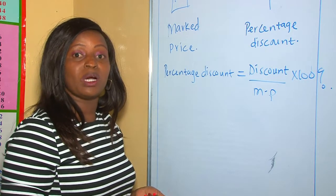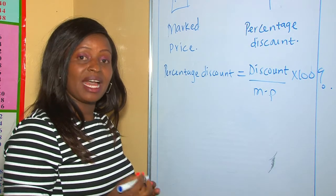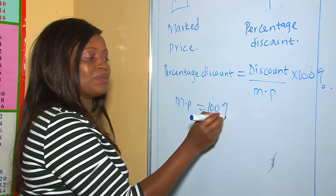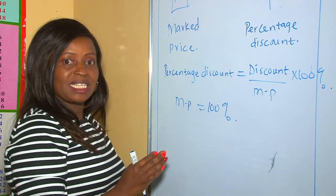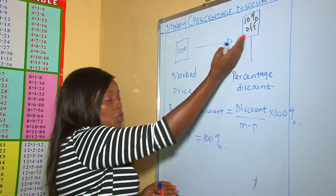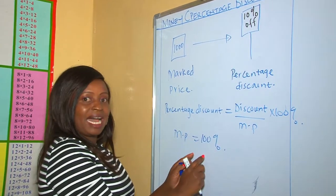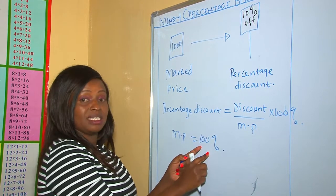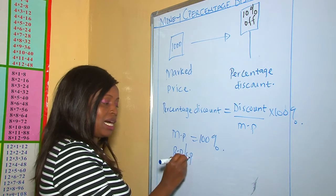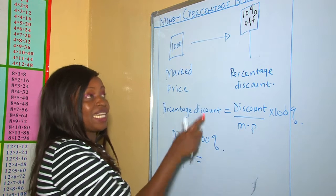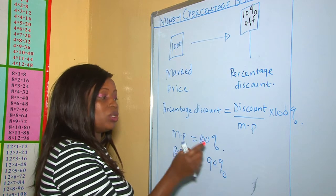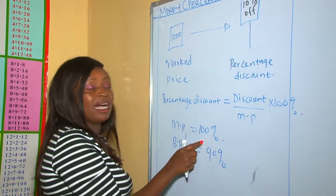You can also use what we call the percentage relation. The marked price percentage is always 100%. In our example, if you are given 10% off, it means you are not going to buy the item at 100% — 10% has been taken off. So the buying price or selling price is now going to be 90%, because 10% has been taken off from the marked price.